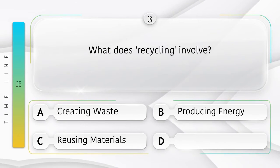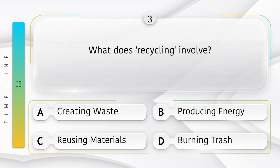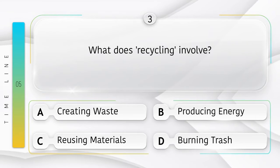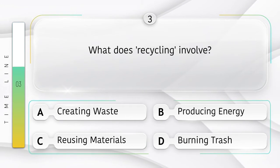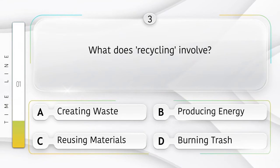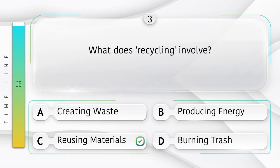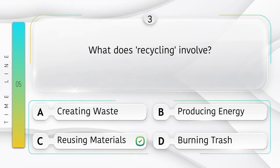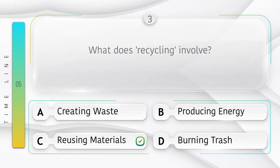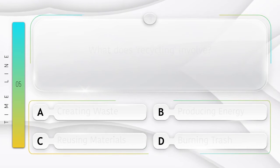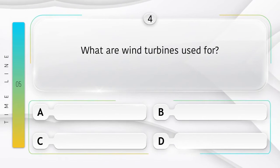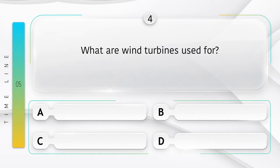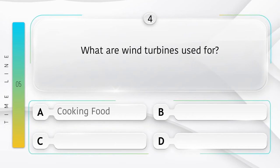What does recycling involve? Option A: creating waste. Option B: producing energy. Option C: reusing materials. Option D: burning trash. Answer is option C: reusing materials.